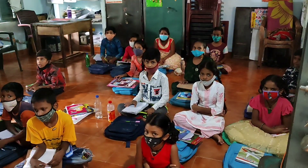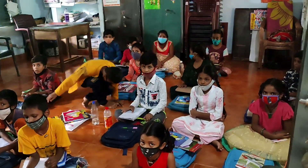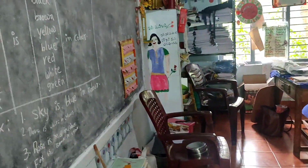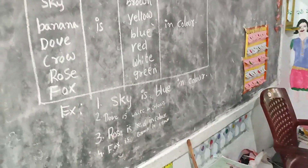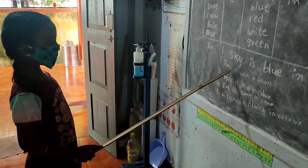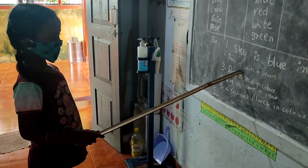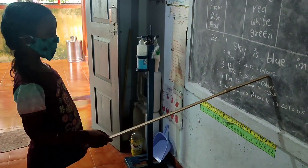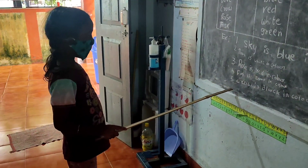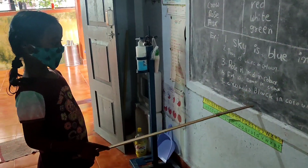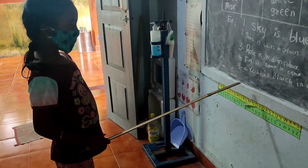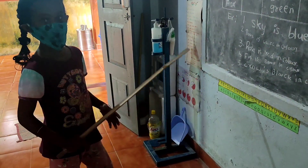Now our friend, come. Dow is white in color. White in color. Okay, fifth one: Crow is black in color. Black in color. Very good. Go to your place.